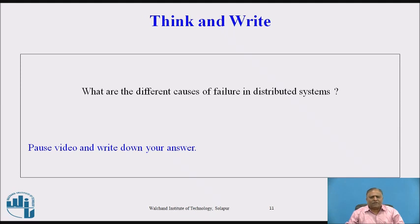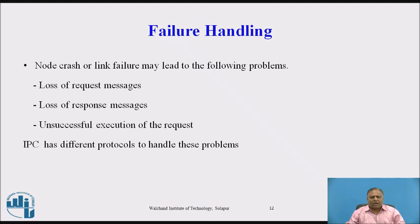Pause the video and write down your answer: what are the different causes of failure in a distributed system? The causes in failure handling are: a node crash or link failure may lead to the following problems — loss of request message by the sender, loss of response message by the receiver, and unsuccessful execution of the sender or receiver. Interprocess communication has different protocols to handle these problems of lost request messages, lost response messages, unsuccessful executions, or node crashes.